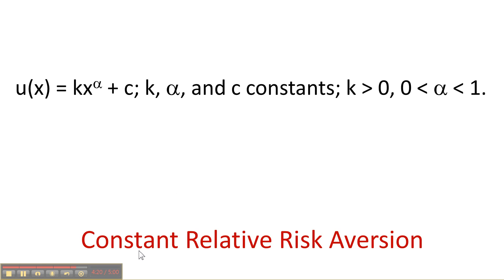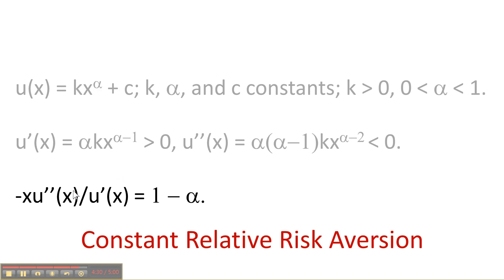Constant relative risk aversion is an x to a power function. And relative risk aversion is minus the second derivative over the first derivative. In this case, the exponent alpha is not the measure of relative risk aversion. It's 1 minus alpha, which is the measure of relative risk aversion.